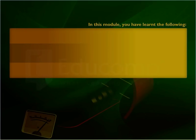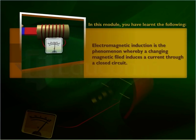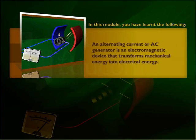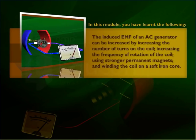In this module you have learned the following: electromagnetic induction is the phenomenon whereby a changing magnetic field induces a current through a closed circuit. An alternating current AC generator is an electromagnetic device that transforms mechanical energy into electrical energy. The induced EMF of an AC generator can be increased by increasing the number of turns on the coil, increasing the frequency of rotation of the coil, using stronger permanent magnets, and winding the coil on a soft iron core.